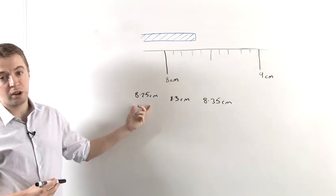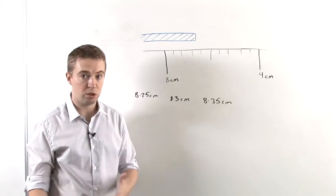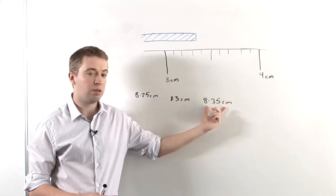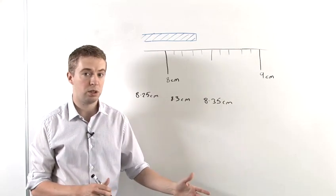So what we say is that it could be as low as 8.25 centimeters or as big as 8.35 centimeters. If it were any lower than 8.25, then we would say it was 8.2 centimeters. If it was any bigger than 8.35, we would say it was 8.4 centimeters.